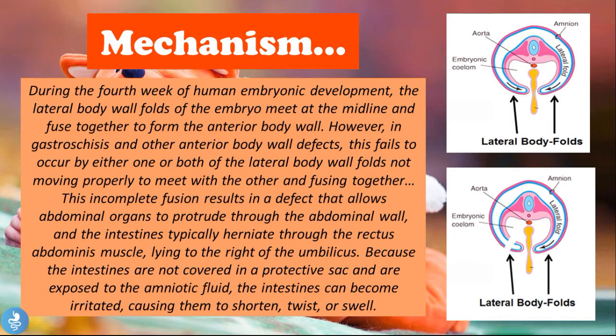This incomplete fusion results in a defect that allows abdominal organs to protrude through the abdominal wall. The intestines typically herniate through the rectus abdominis muscles lying to the right of the umbilicus. Because the intestines are not covered by a protective sac and are exposed to amniotic fluid, they can become irritated, causing them to shorten, twist, or swell.